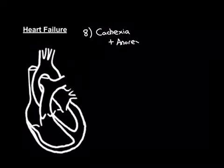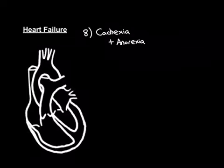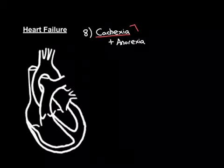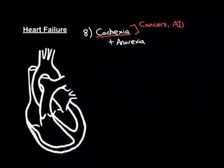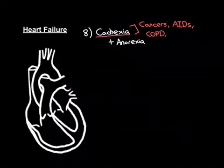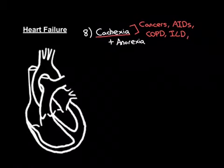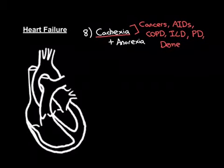Let's have a brief discussion of these two terms — they mean different things. Cachexia is the way in which a huge number of terminal diseases end. For example, cancers can end with cachexia. AIDS can end with cachexia. Many horrific lung diseases can end with cachexia — COPD and interstitial lung disease can end with cachexia. Neurological diseases can end with cachexia, so Parkinson's disease can end with cachexia, and dementia can even end with cachexia.